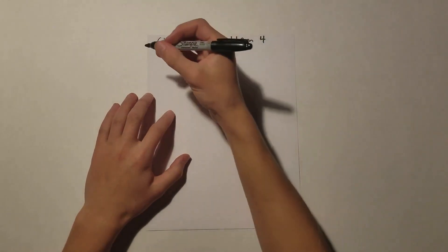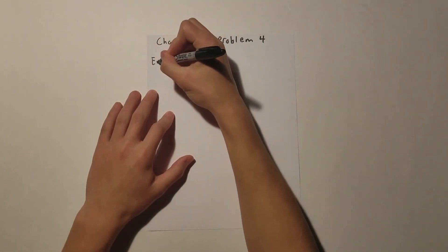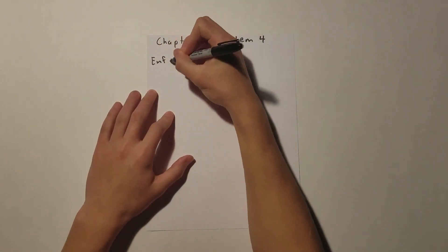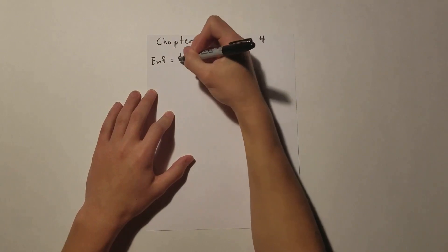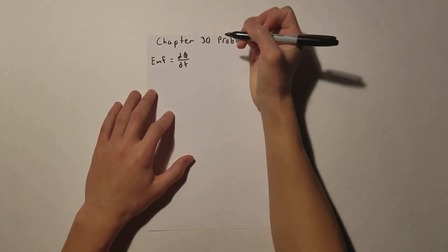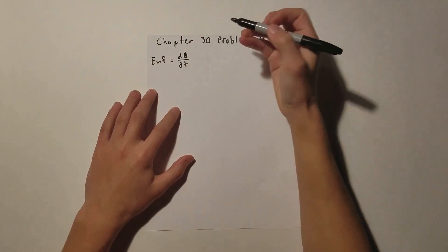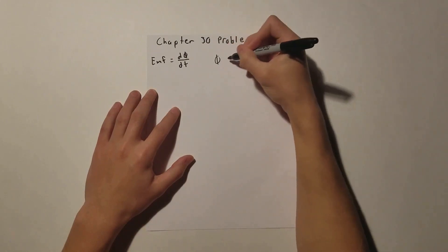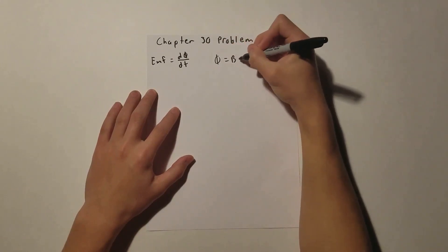So we know that EMF is equal to the change in flux with respect to time. And we also know that flux is equal to the B field times area.